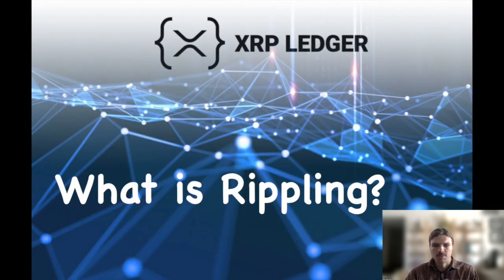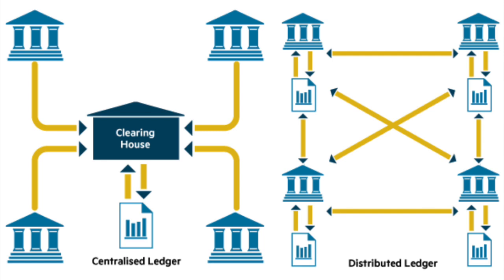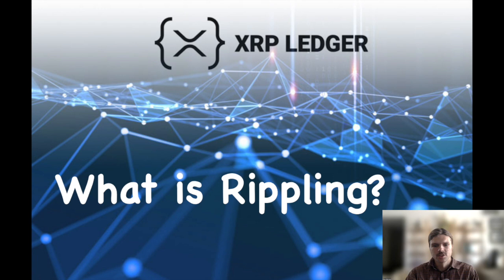So in summary, the process of rippling involves updating the balances on the trust lines between parties involved in a transaction, with the issuer acting as a passive intermediary. This allows for the efficient and secure transfer of value between parties without the need for a central intermediary or clearinghouse. And that will conclude today's video. I'll be sure to include links to more information about rippling in the description box below, so thanks for watching and I'll catch you next time.